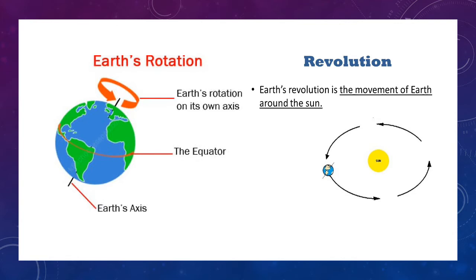The earth rotates from west to east, and it also moves around the sun in an anti-clockwise direction — that is, from west to east. So both motions take place from west to east. Third point: the earth rotates on its own axis — an imaginary line around which the earth rotates — while revolution takes place along a fixed orbit, which is elliptical in shape.